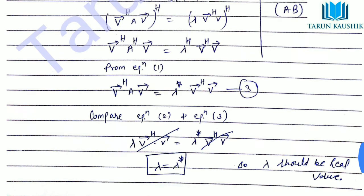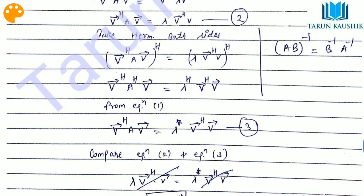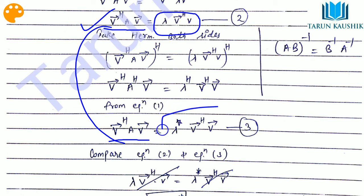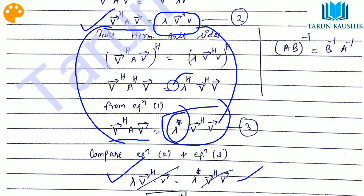From Equation 2 and Equation 3, both left-hand sides are V^H · A · V, so they are equal. Therefore the right-hand sides must also be equal: lambda · V^H · V = lambda^* · V^H · V. The term V^H · V appears on both sides and cancels, leaving lambda equals lambda^*. Here lambda^* means the conjugate of lambda, since for a scalar, the Hermitian is just the conjugate.